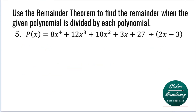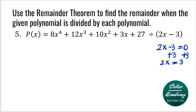Question 5: P of X is equal to 8X to the fourth plus 12X cubed plus 10X squared plus 3X plus 27, divided by 2X minus 3. To solve for X, we set 2X minus 3 equal to 0. Adding 3 to both sides gives 2X equals 3, and dividing by 2 gives X equals 3 over 2. Note: the X value here is not simply 3.